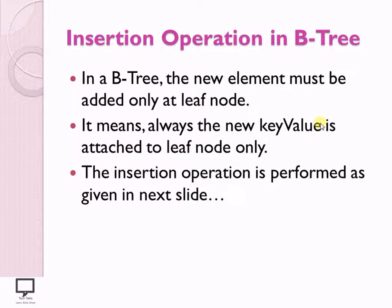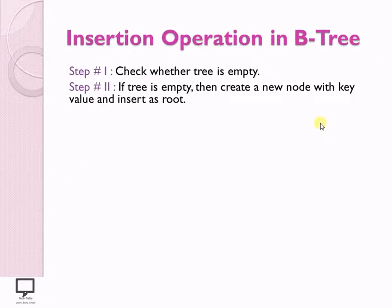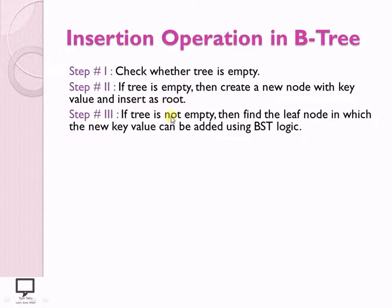The insertion algorithm starts with Step 1: check whether the tree is empty or not. If the tree is empty, Step 2 is to insert the node as the root node itself. Inserting the first key value is very simple — just make that key the root node. Step 3: if the tree is not empty and already has some values, we need to find the leaf node into which the new key can be added, using binary search tree logic.